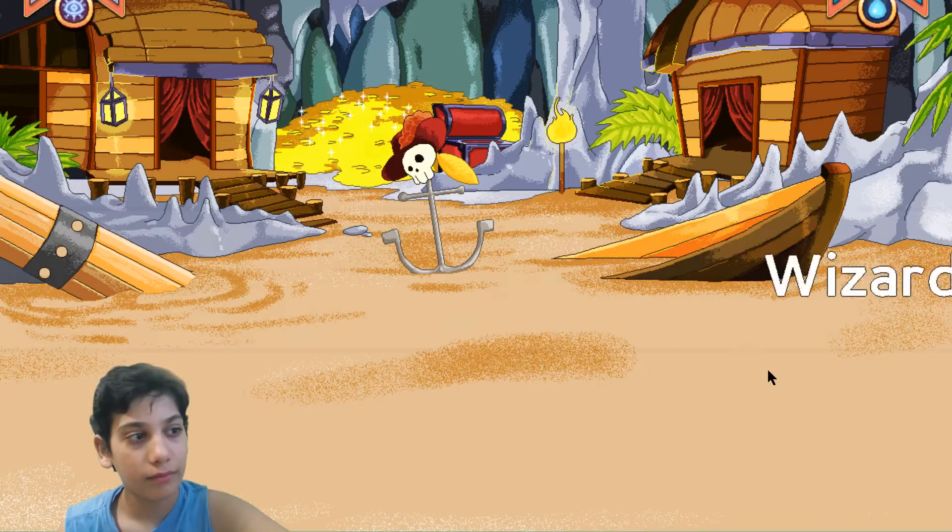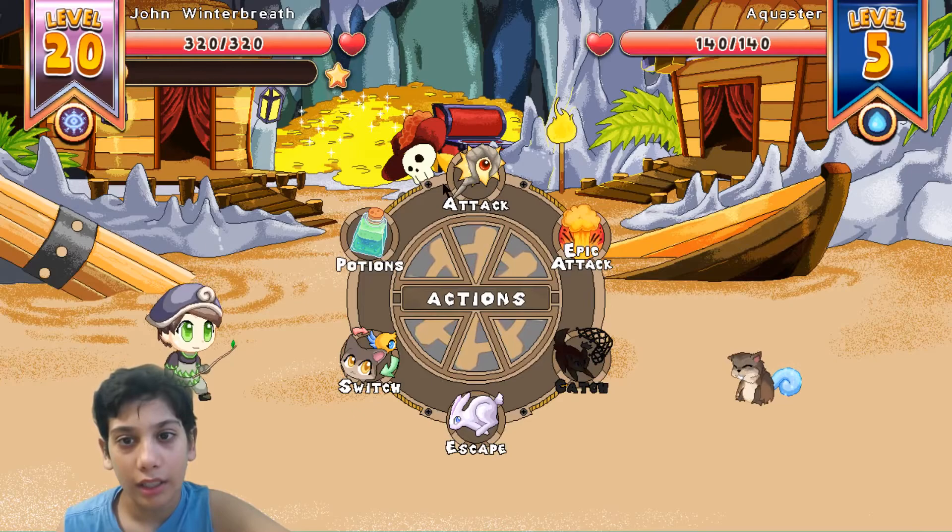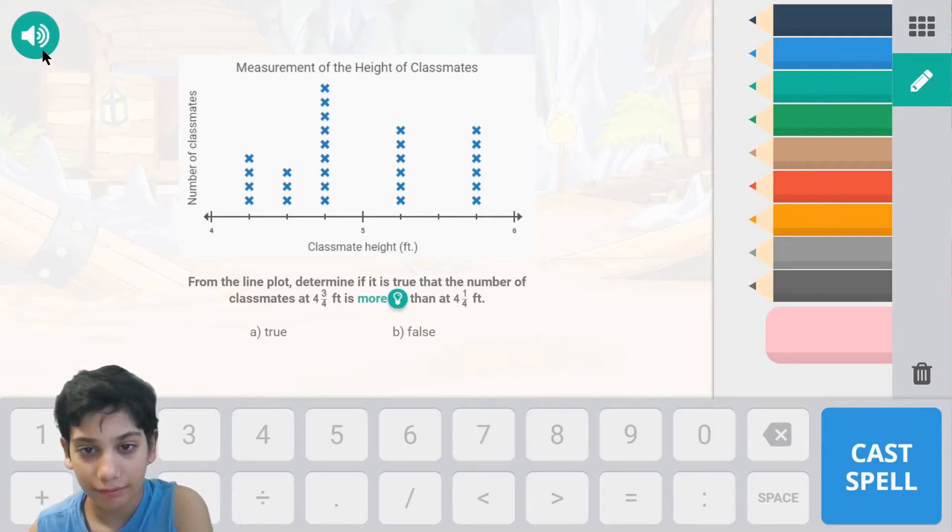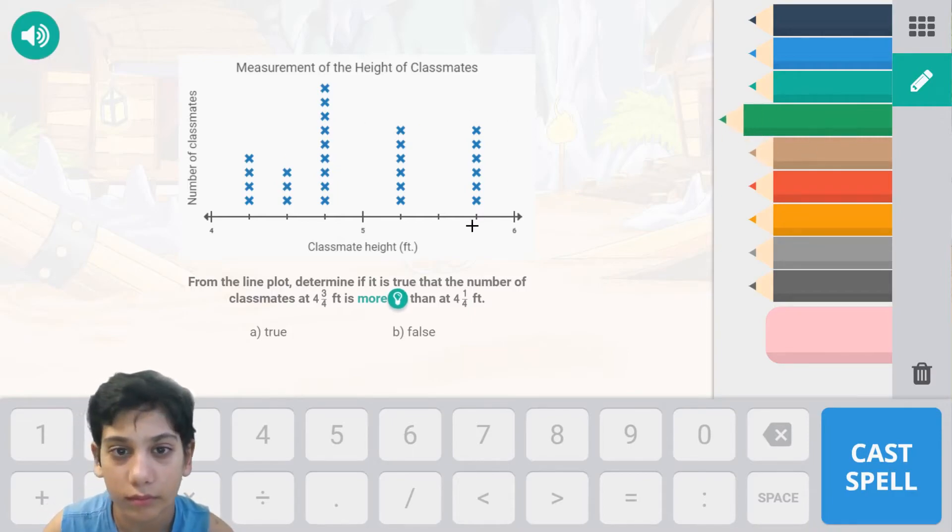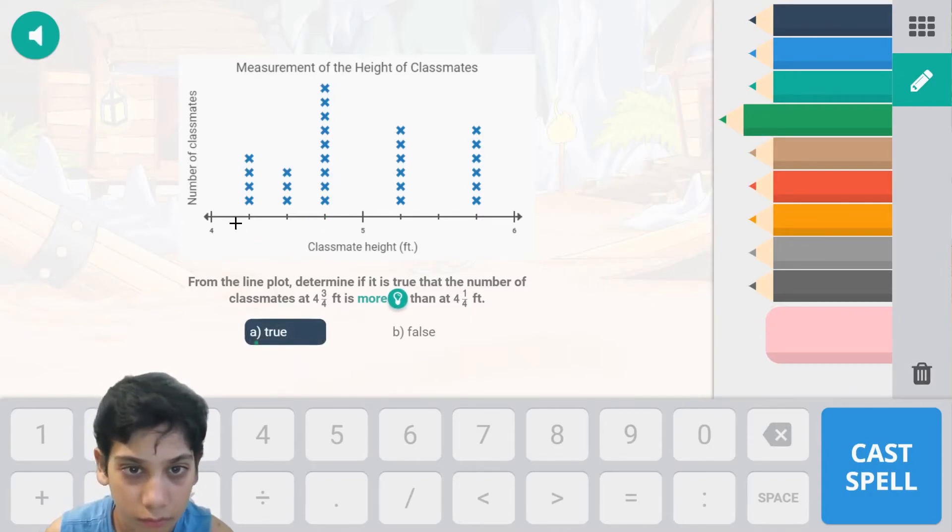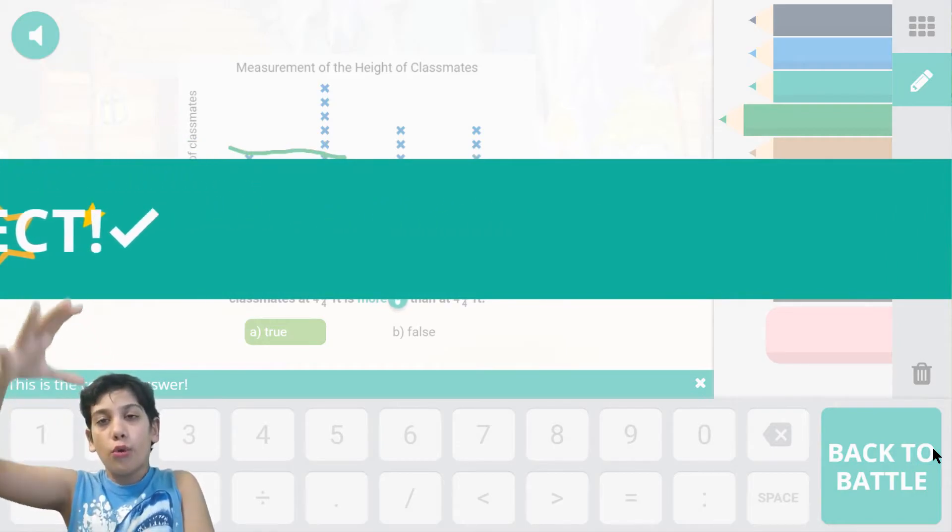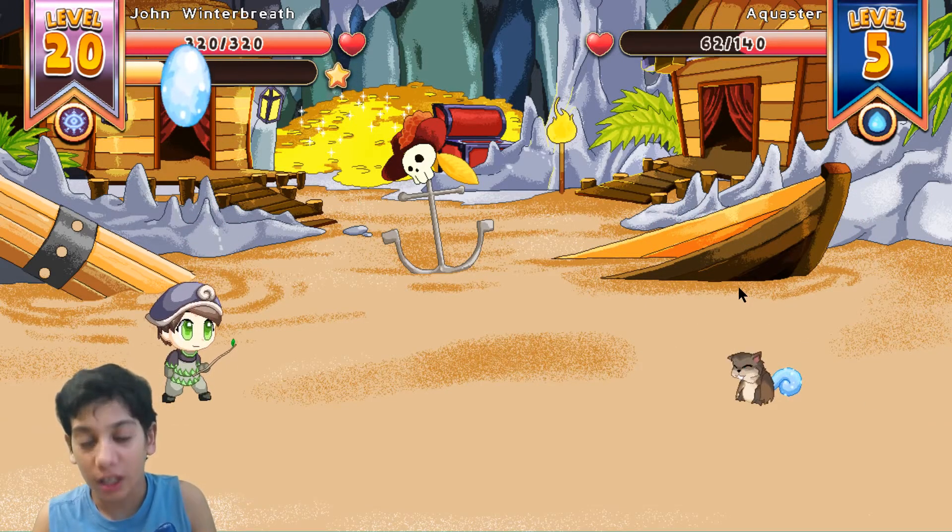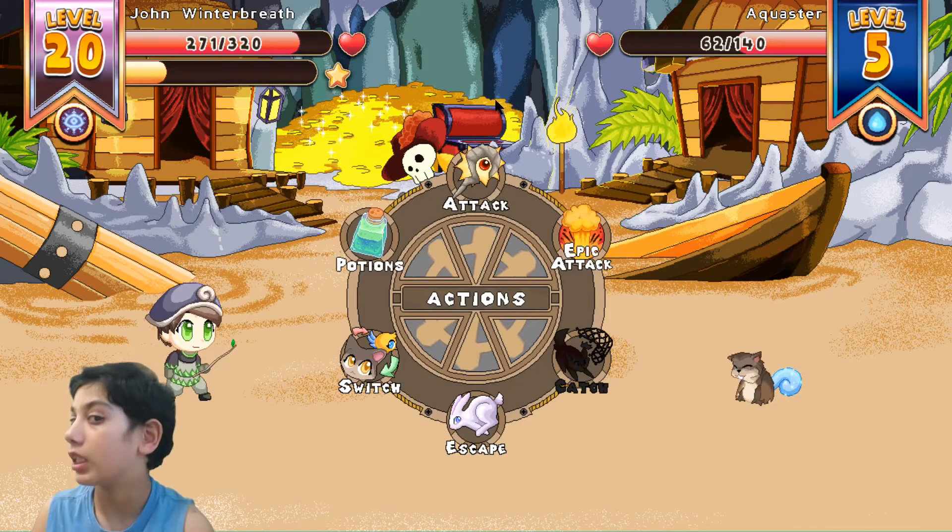Ready to help me out? Yep, wizard battle! Now let's click attack, water blast, and see how much damage that does. Let's hear the question. From the line plot, determine if it is true that the number of classmates at 4 and three over four feet is more than 4 and one over four feet. A: true, B: false. Our answer is true because the classmates at 4 and three-fourths is about 5 higher than at 4 and one-fourth. So our answer is true. Correcto! 78 damage, wow, that is just a lot and an amazing amount of damage done by me, One Doctor Genius.